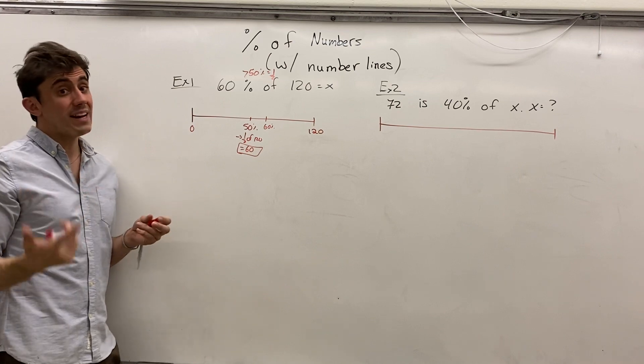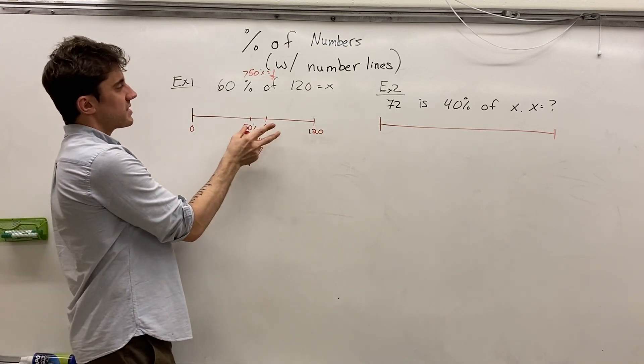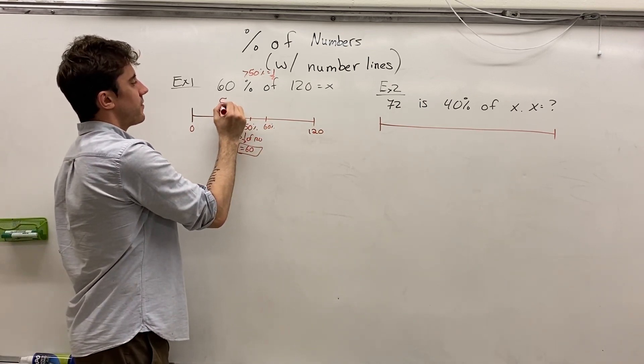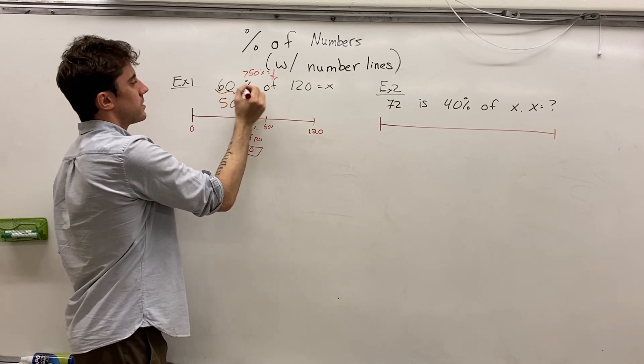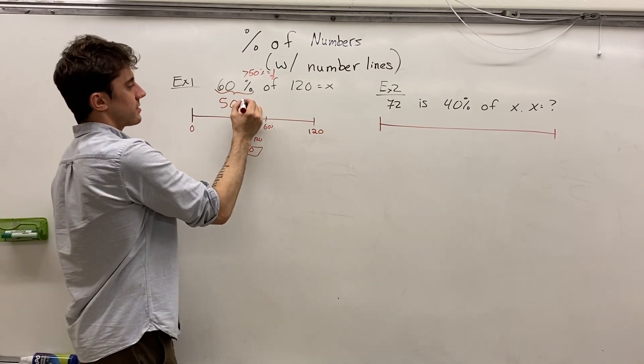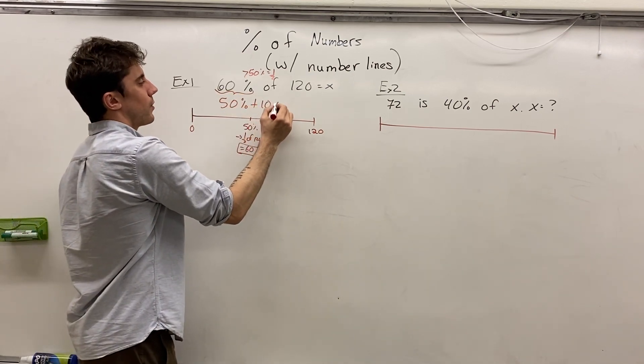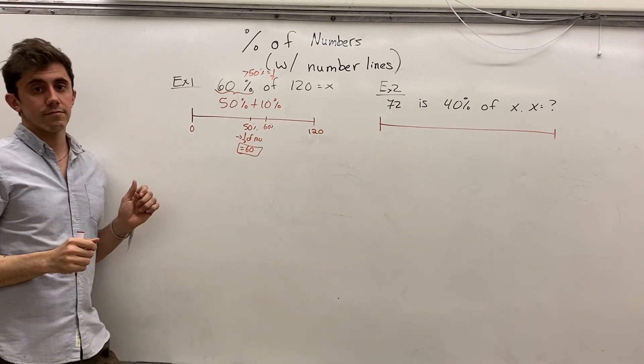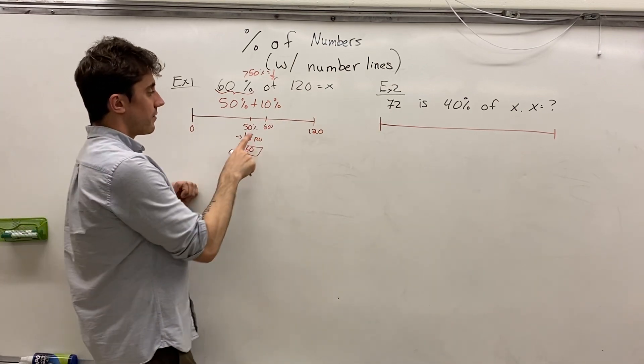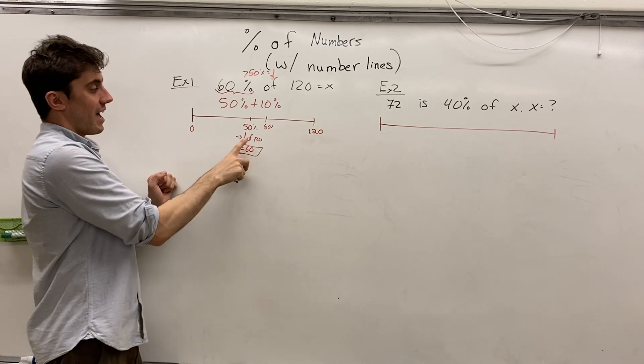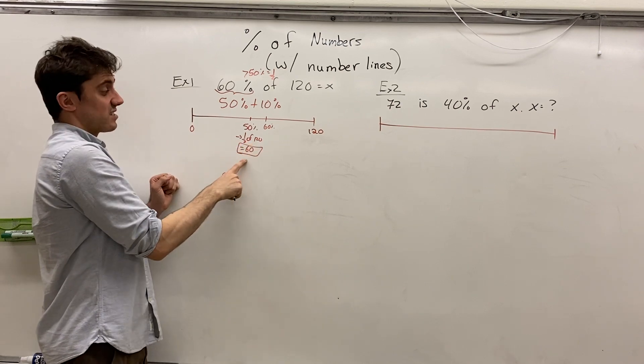Now we can think, well there are many different ways to do this. We can think of 60% as 50%. So if we can break down 60% into 50% plus 10%, that would be one way.